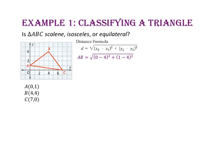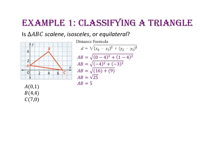Using the ordered pairs for points A and B, the length of segment AB equals the square root of (0 minus 4) squared plus (1 minus 4) squared. 0 minus 4 is negative 4, and 1 minus 4 is negative 3. Negative 4 squared is 16, and negative 3 squared is 9. 16 plus 9 is 25, and the square root of 25 is 5, so the length of segment AB is 5.